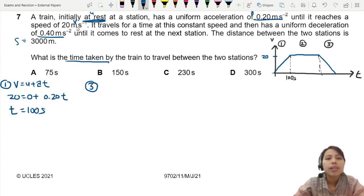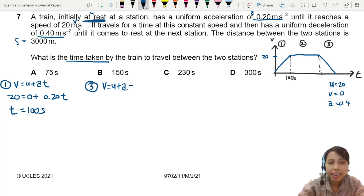So section 3. Constant speed and decelerate of 0.4. Let's see what we have for section 3. We have initial speed, which is 20. We have the final speed, which is 0. Acceleration, 0.4. Plenty of information. I think we'll try to find the time first. So we'll do V equals to U plus AT again.